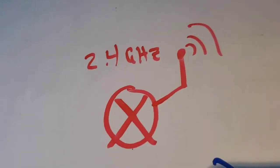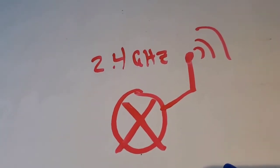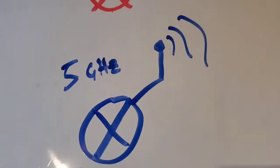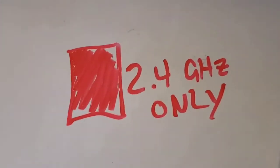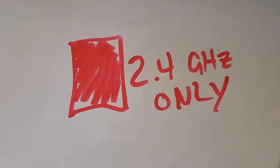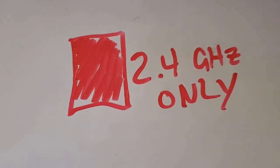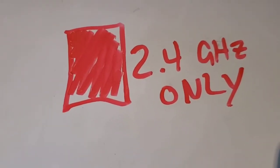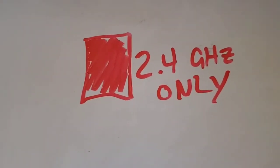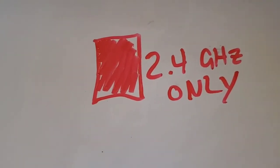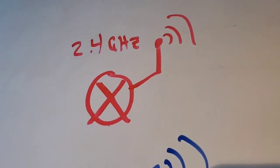Some routers give off only one frequency, such as 2.4 gigahertz, while others may be 5 gigahertz only. For example, an older smartphone — an old iPhone or old Android — that only supports 2.4 gigahertz will only be able to communicate with routers broadcasting at that frequency.